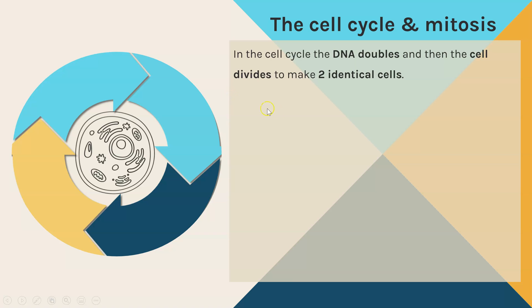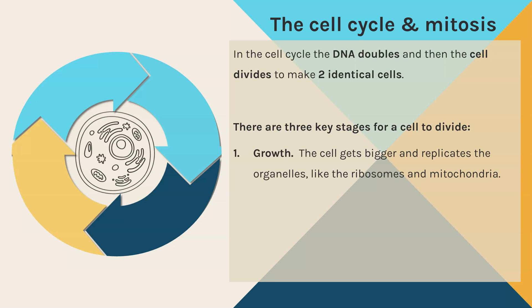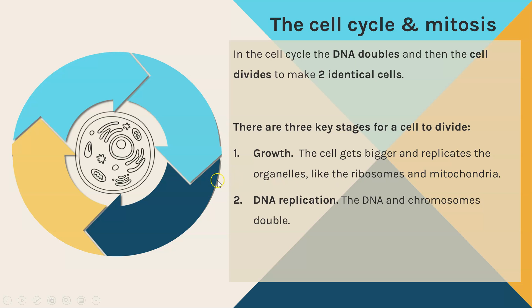The cell cycle is split into three key stages. Within the cell cycle the DNA doubles and then the cell divides, and that is how we get two identical cells. The first stage is that the cell has to grow — if the cell is going to split in half to make new cells it has to grow first so that every cell doesn't become smaller and smaller. The cell gets bigger and all of the organelles, which are the internal cell structures, also replicate — things like the ribosomes and the mitochondria. As well as that, all of the DNA doubles, so DNA replication happens, meaning there are now two copies of every single chromosome, so that when the cell splits both new cells have the correct number of chromosomes — which in humans is 23 pairs, or 46 in total.